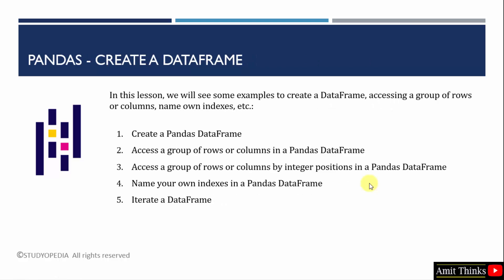We will see the following examples to create a data frame. These examples will actually help you in understanding the concept of data frame completely. First, we will create a data frame. Then, we will access a group of rows and columns. After that, we will access the rows and columns by integer positions using an attribute. You can also name your own indexes instead of the default one. We will also run an example to completely iterate a data frame.